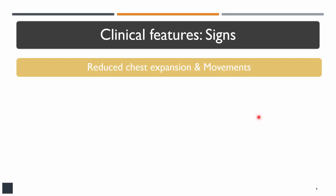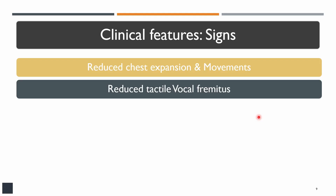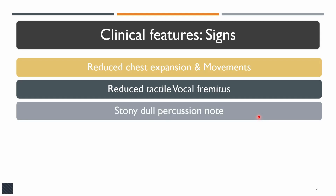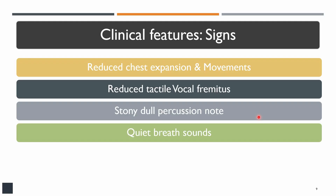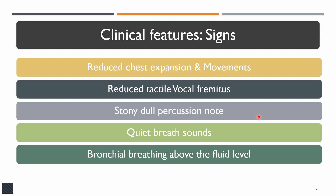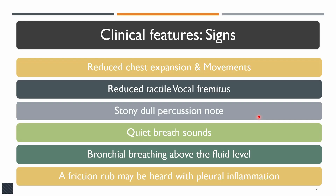Moving to clinical examination: you will find reduced chest expansion and movement, and reduced vocal parameters. The stony dull percussion note is the most important finding, because reduced chest expansion and movement can be found in any pathology — pneumothorax, pneumonia, pleural thickening, or mass. You can differentiate pleural effusion from other pathologies on the basis of the dull or stony dull percussion note. Breath sounds are absent or reduced, and there can be bronchial breathing above the fluid level due to collapse of the underlying lung. In small effusions, a friction rub may be found, indicating pleuritis.